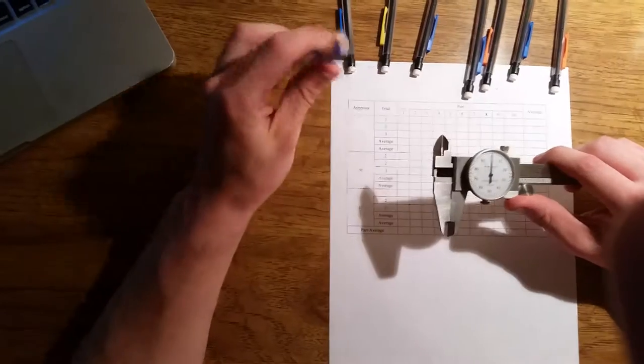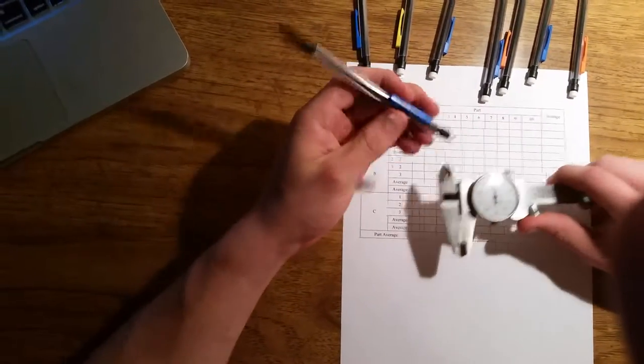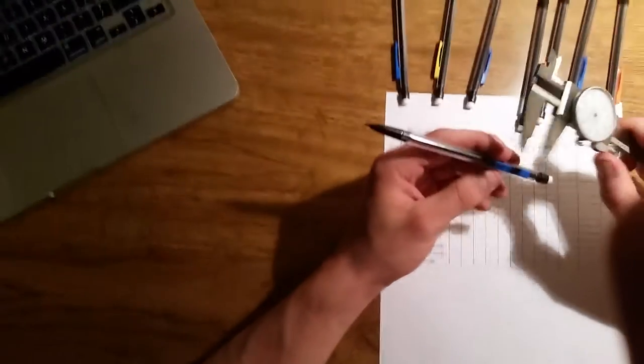You're going to want to take your 10 parts and label them 1 through 10. Today I'm going to be measuring the Bic pencil clip.